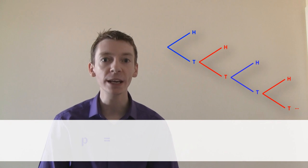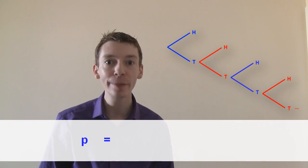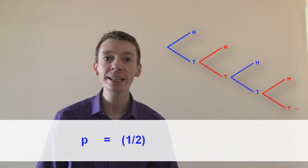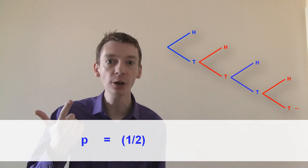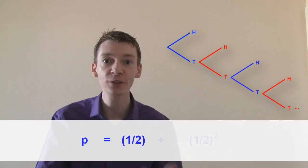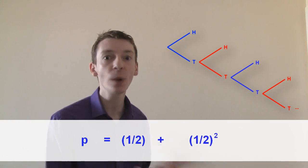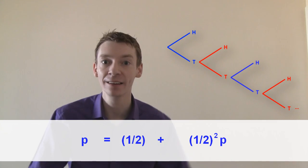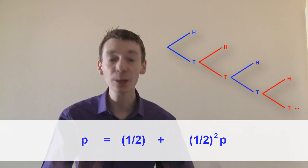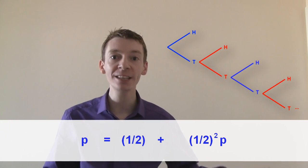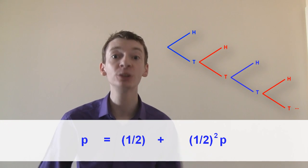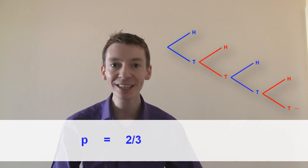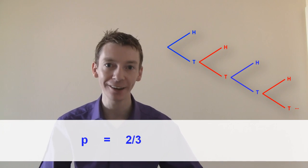So the probability that Ant will win is the probability he wins on the first trial, which is one half, plus the probability that Ant has lost then Dec has lost — which is one half squared — times the probability he wins from this point on, which is P again. Solving this gives P equals two-thirds, just like before, although this time it's much neater.